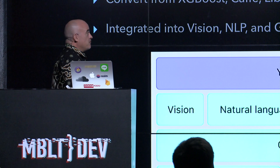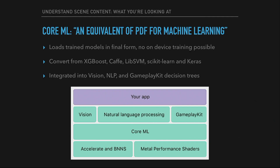For those who missed the Core ML sessions earlier today — it's the equivalent of PDF for machine learning. We have models, we just load our model and feed it stuff. Underneath, we have the Metal shader for Vision, we have Accelerate and the neural network layers. On top, Apple provides Vision — that's what we're going to be looking at — as well as natural language processing and GameplayKit.